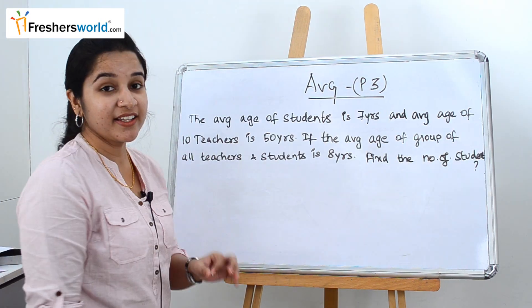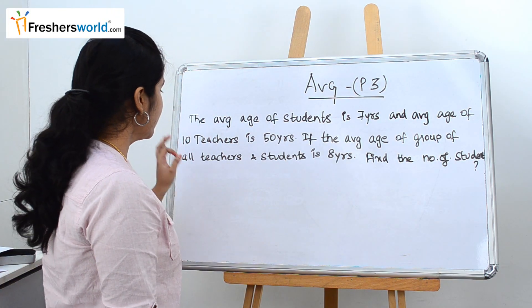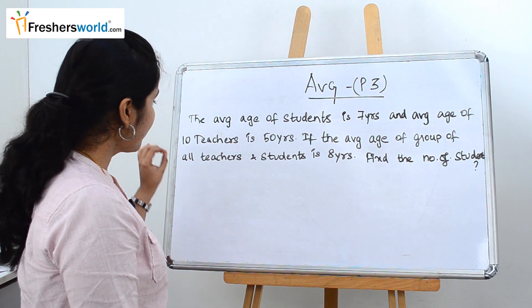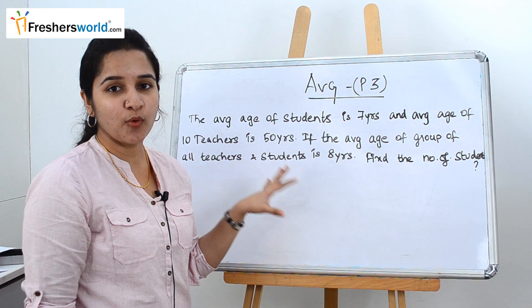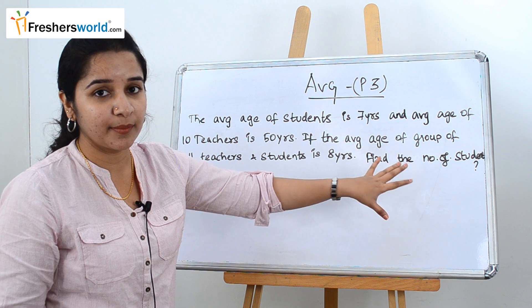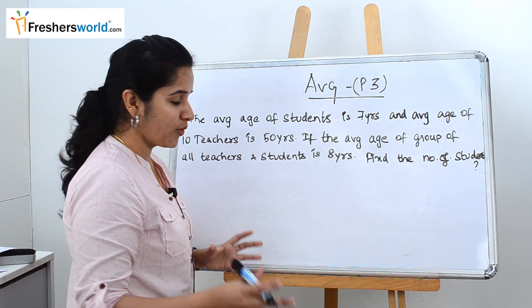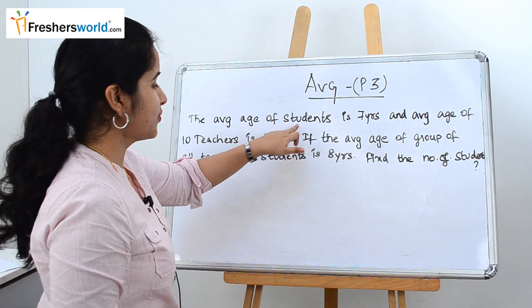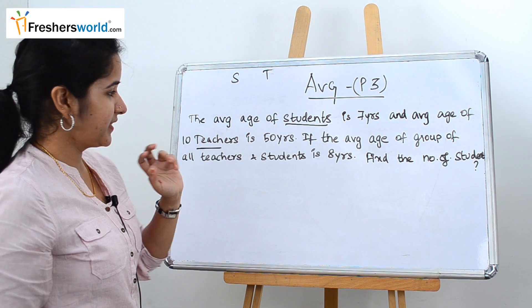Let's go to the next sum. The next question is: the average age of students is 7 years, and the average age of 10 teachers is 50 years. If the average age of the group of all teachers and students is 8 years, find the number of students. This sum is similar to the previous one, but here the question asks for the total number of students. There are two groups: students and teachers.